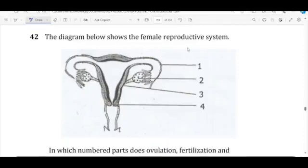The diagram below shows the female reproductive system. So this is the diagram showing the female reproductive system, and it's labeled 1, 2, 3, 4.